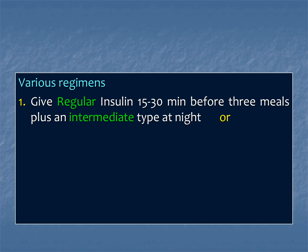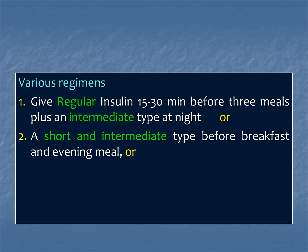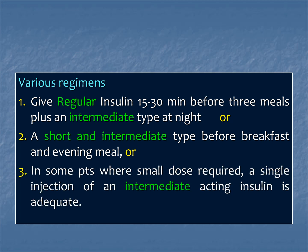Various regimens are: number one, give regular insulin about 15 to 30 minutes before the meal — three times a day — plus add intermediate-acting insulin especially at night. Second, short and intermediate-acting insulins are given as a mixture before breakfast and before the evening meal. Third, in some patients where a small dose is required, a single injection of intermediate-acting insulin is adequate and sufficient.